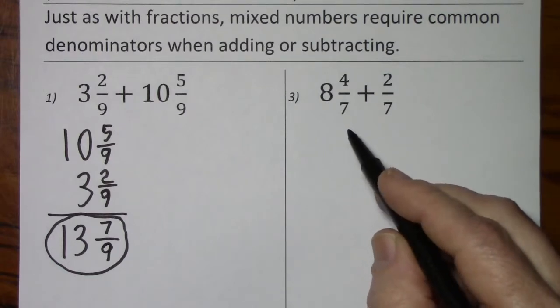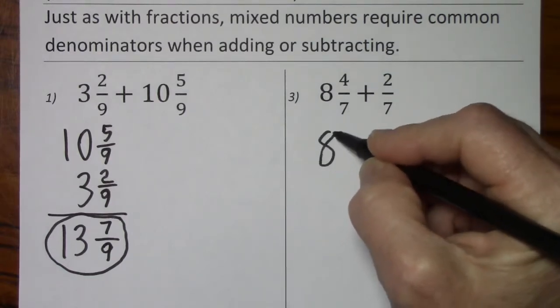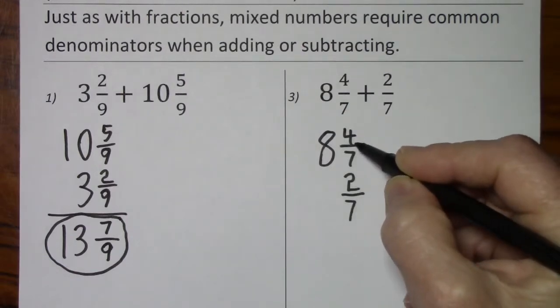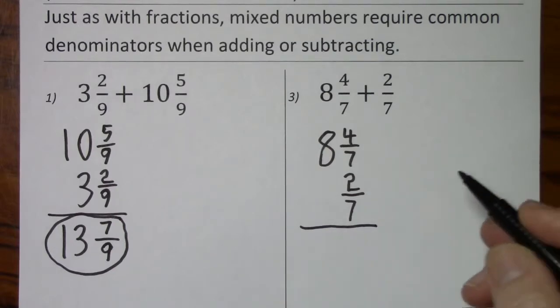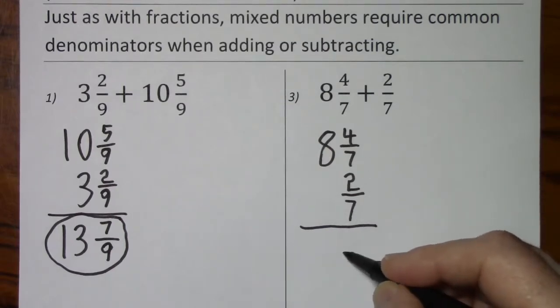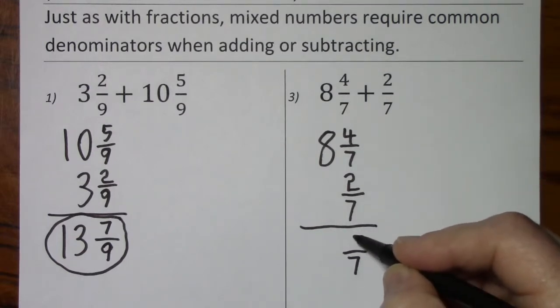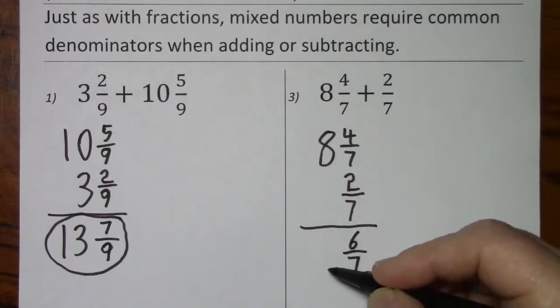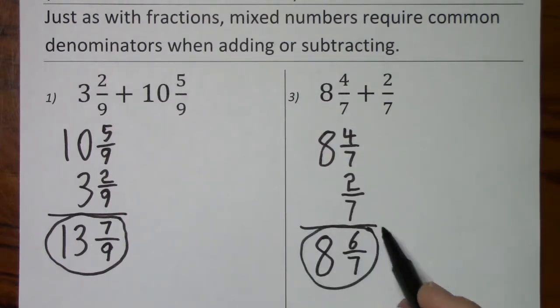Looking at the next problem, both signs are the same, so we will be adding. This fraction just goes under the previous one. We have our common denominators, so we keep them. 4 and 2 gives us 6. And this 8 simply comes down. So 8 and 6 sevenths is our final answer.